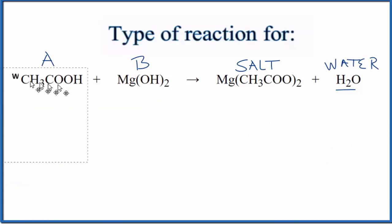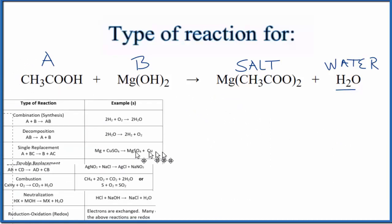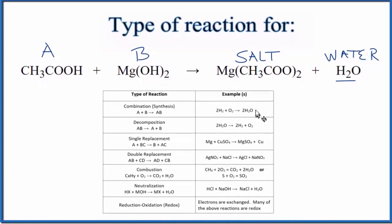Let's look at a table of common types of chemical reactions. We know that this is a neutralization reaction. We have an acid and a base, we get salt and water. But it's also considered a double replacement reaction.